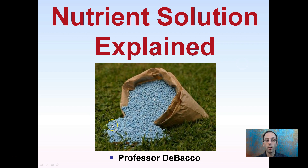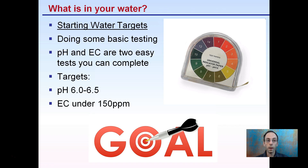We need a solution to be aqueous — dissolved in water. Since we're looking at water, we need to start with targets: what water are we going to use? Start with some basic testing. pH and EC are two easy tests you can complete. Your targets are water in the 6 to 6.5 pH range and EC under 150 parts per million.